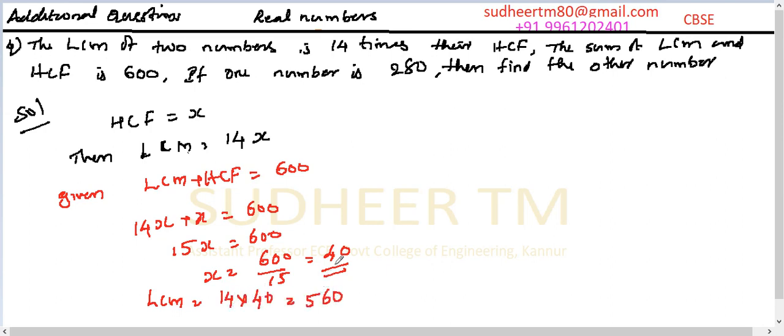Now what we have: LCM into HCF is equal to first number into second number. That is 40 into 560 is equal to... HCF is 40, sorry, first number is 280 into Y. So Y is equal to 40 into 560 divided by 280.